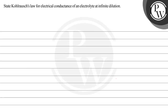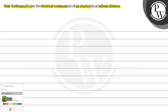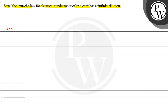Hello, let's start solving this question. The question says: state Kohlrausch's law for electrical conductance of an electrolyte at infinite dilution. So we have to explain Kohlrausch's law for electrical conductance. This question is from electrochemistry, so the key concept will be electrochemistry.